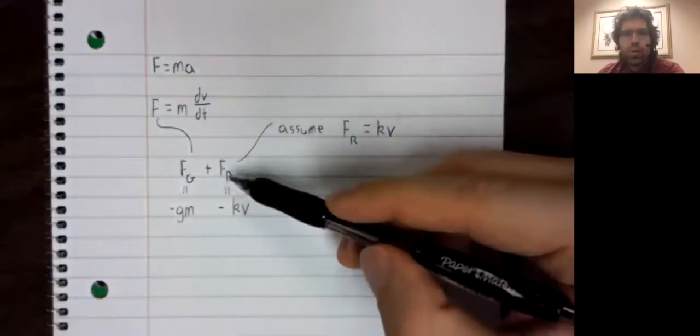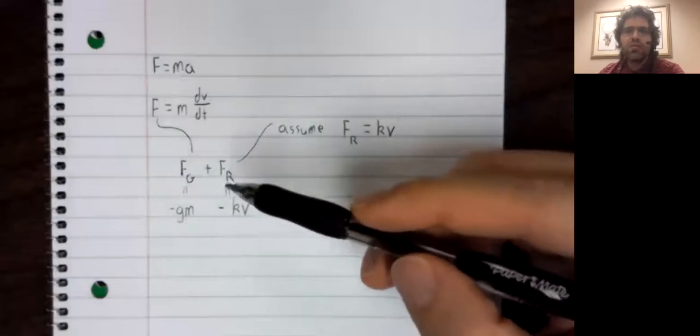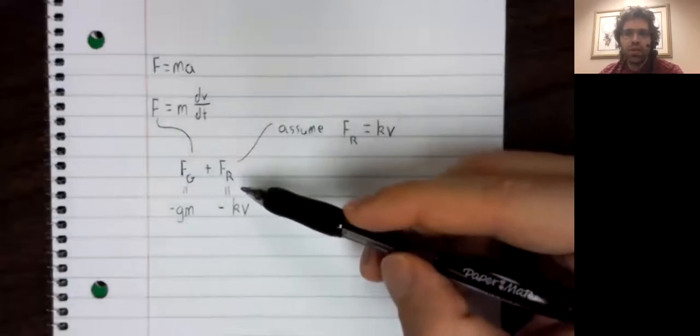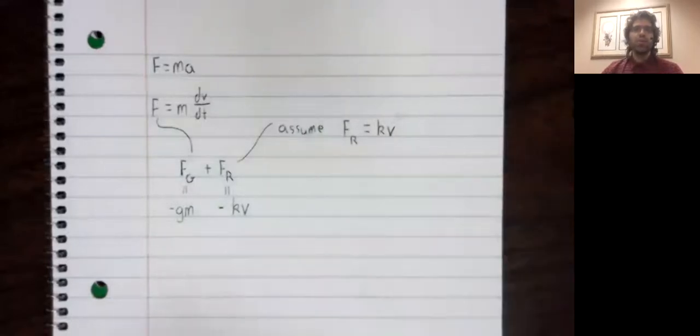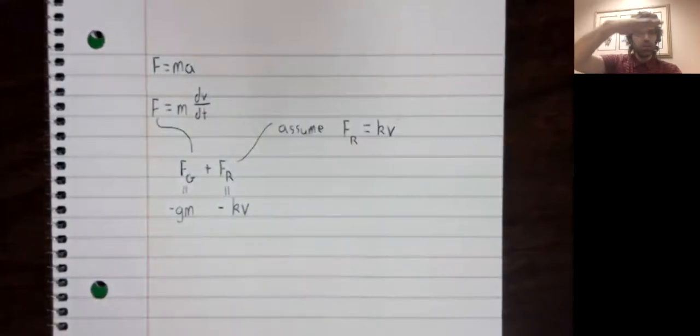Well, force due to air resistance is always opposing the movement of the object. So if the object is going up, this force should be pushing it down. If the object is going down, this force should be pushing it up.